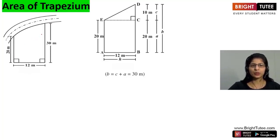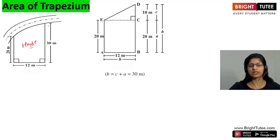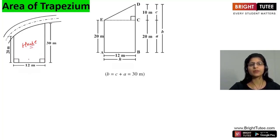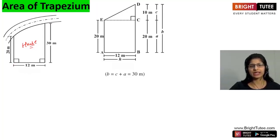Suppose there is one girl Nazma and her house is alongside the road like this. It is alongside the road. Now suppose we have to find the area of her house. Can you directly by looking at this picture find out the area? Definitely we cannot, because we don't have a formula for such a figure. What we did is we named the points as A, B, C, and then joined this point and from here joined this point.